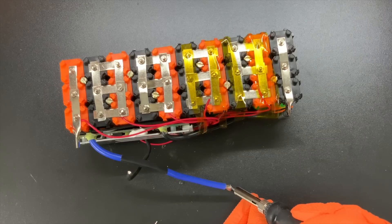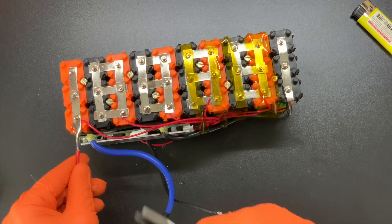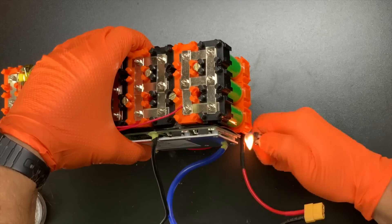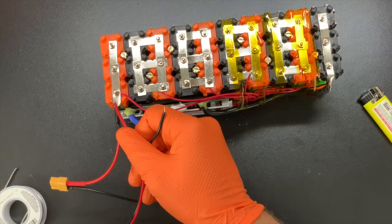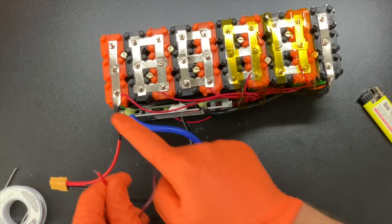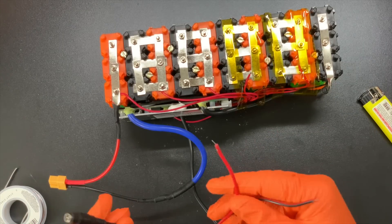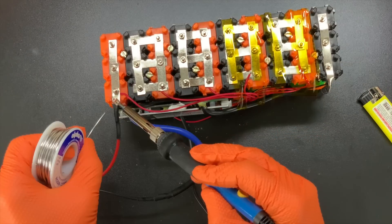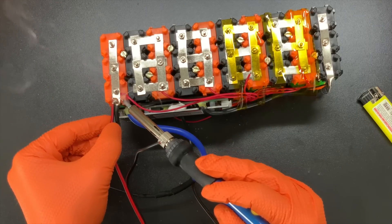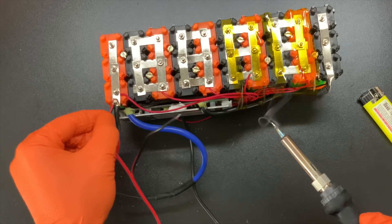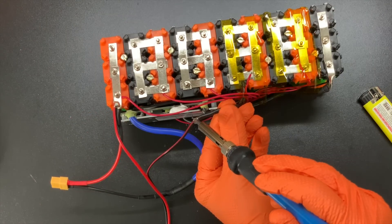Once the balance wires are connected, I can then connect the discharge connector to the positive terminal of the battery, and the negative wire of the discharge connector gets connected to the P-minus wire of the BMS. The charge connector comes next, and I often forget to include it in the positive discharge connector, but you can always just solder the red wire from the charge connector onto the wire clamp afterwards or connect it under a nut. It just has to be somehow connected to the positive terminal. And the negative wire of the charge connector then gets connected to the C-minus wire on the BMS.